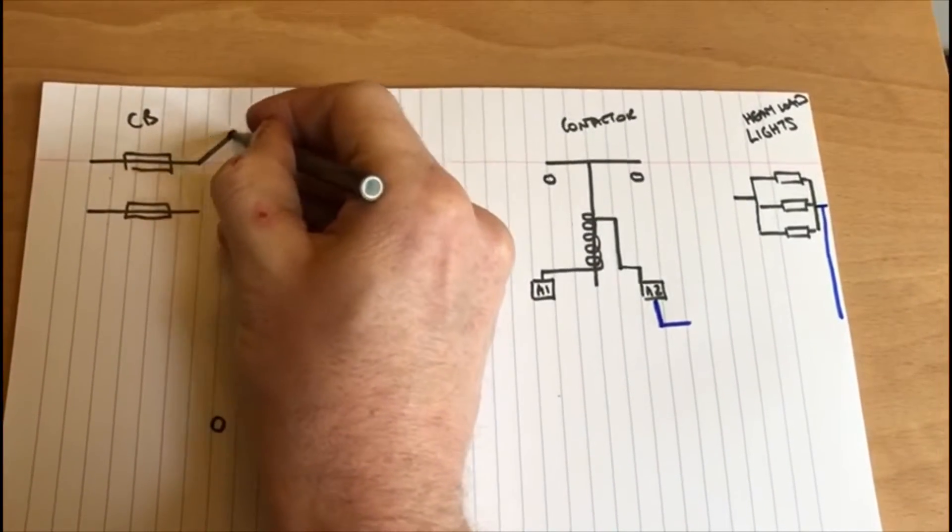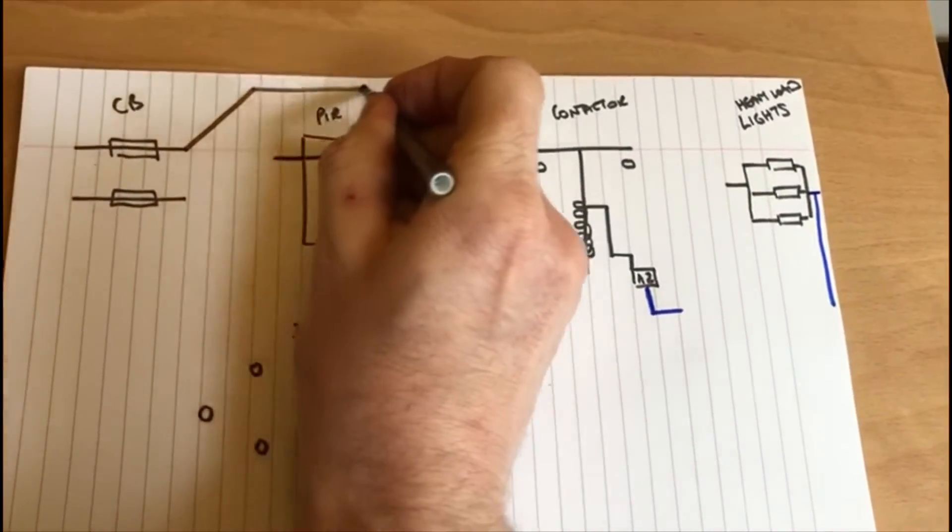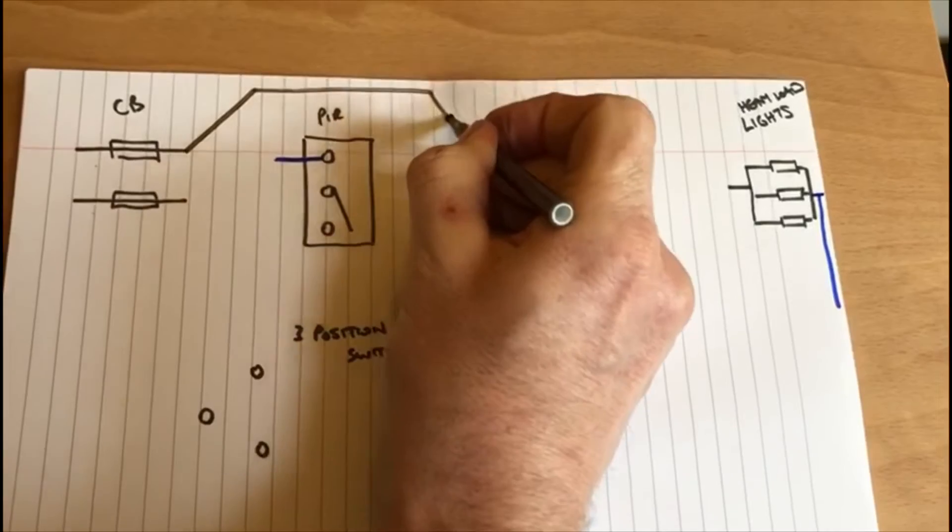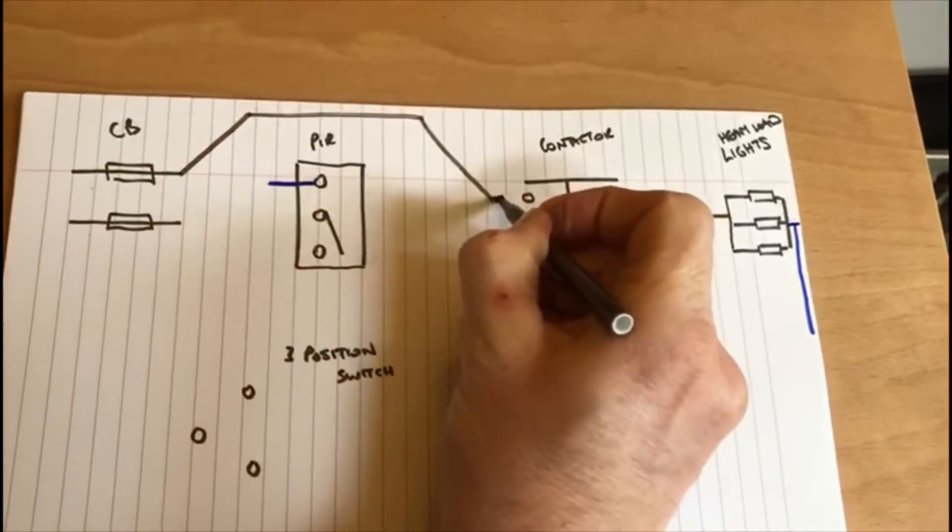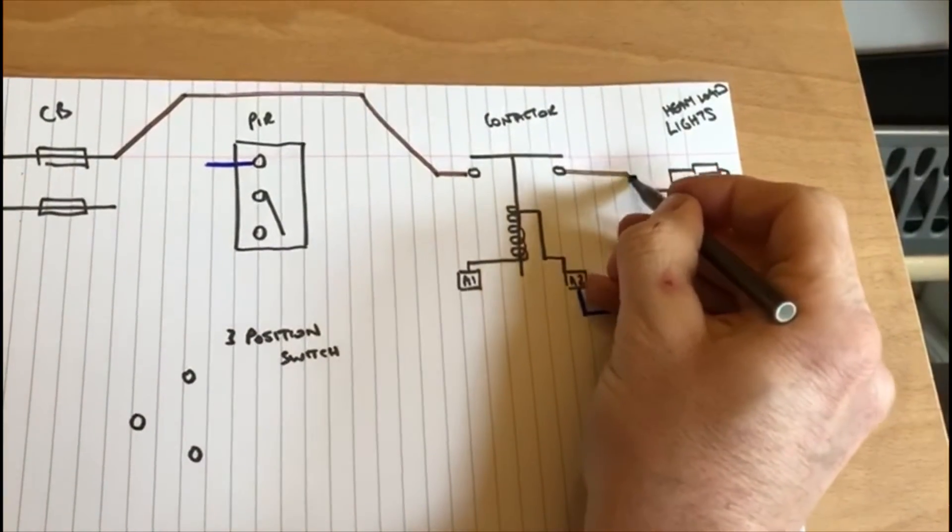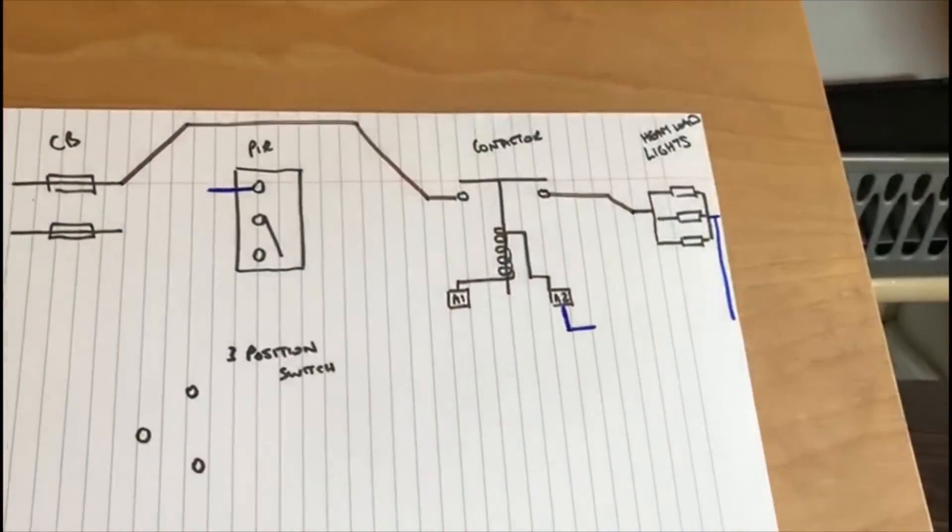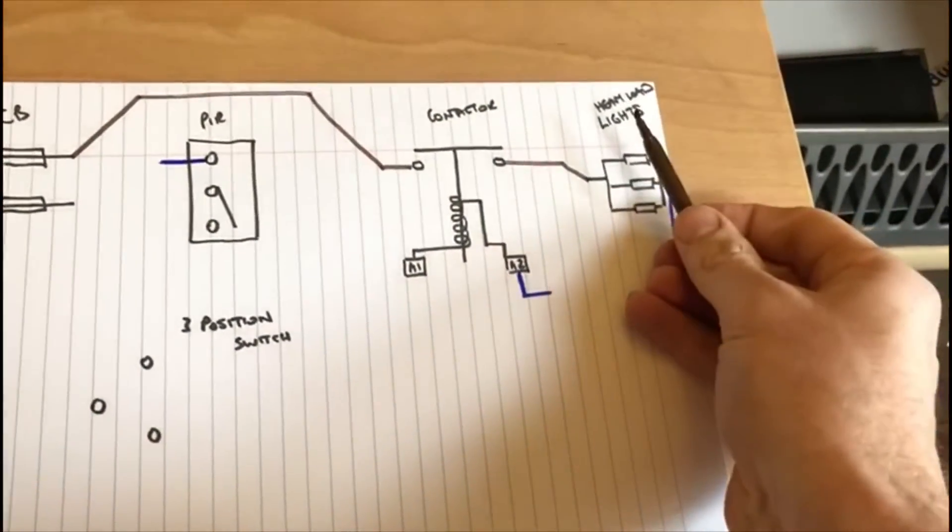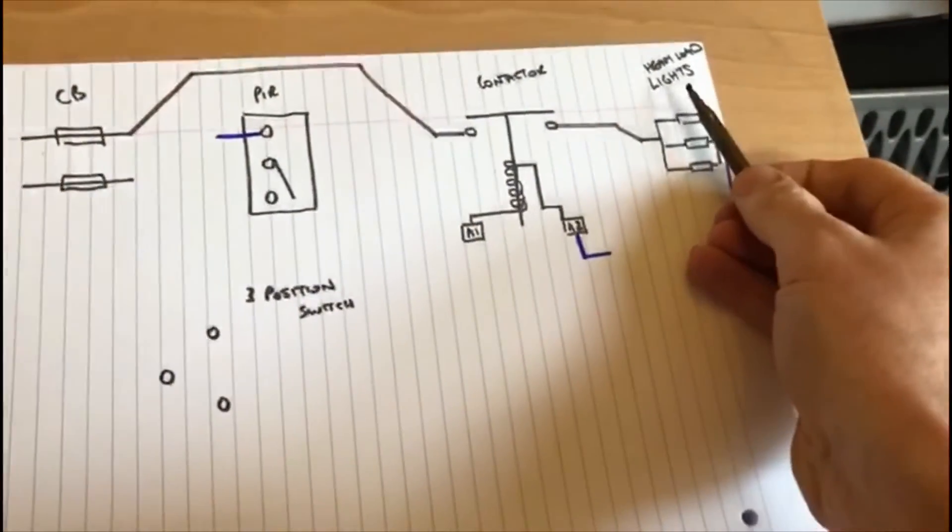What's going to happen is we're going to take a feed directly across from one of those circuit breakers across to the contactor and straight through to the lights. Now I've said here a heavy load, so this could mean that you could have eight or ten fluorescent lights working.